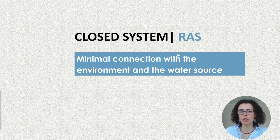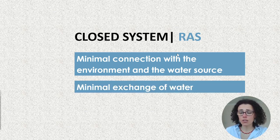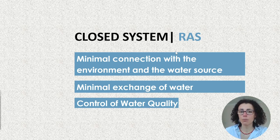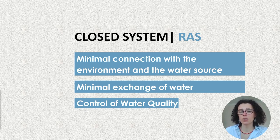So a recirculating aquaculture system has a minimal connection with the environment and the water source. It has a minimal exchange of water, and you have control of water quality. This is why you can have a business in a very cold place on the planet — outside could be 10 degrees and you still can be growing fish from a tropical habitat because you can control the temperature, the pH, the water quality. And also the fact that you're not wasting any water — you're trying to economize the water that you're using.